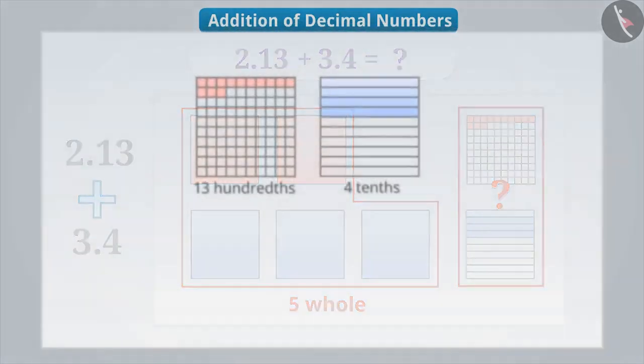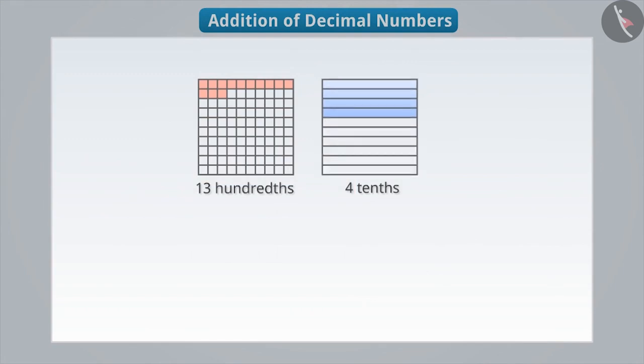Okay, let me tell you. If we talk about square of four tenths, then we can divide each of its parts in 10 equal parts. By doing so, we will get a total of 100 parts. Now you can see that there are 40 shaded parts here. So, we can say that four tenths is equal to 40 hundredths.